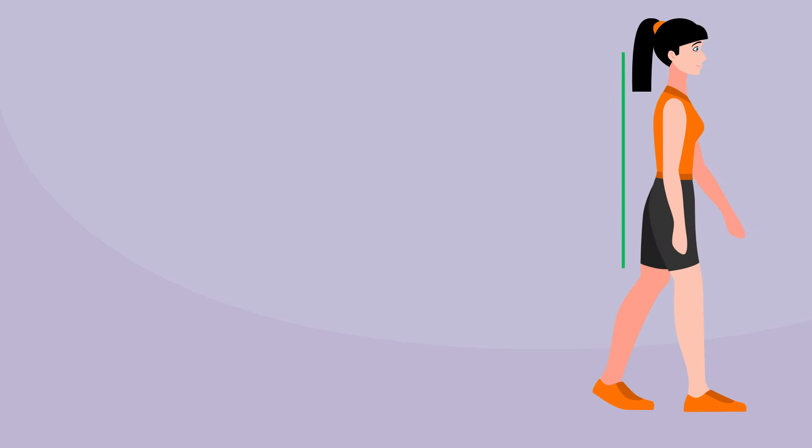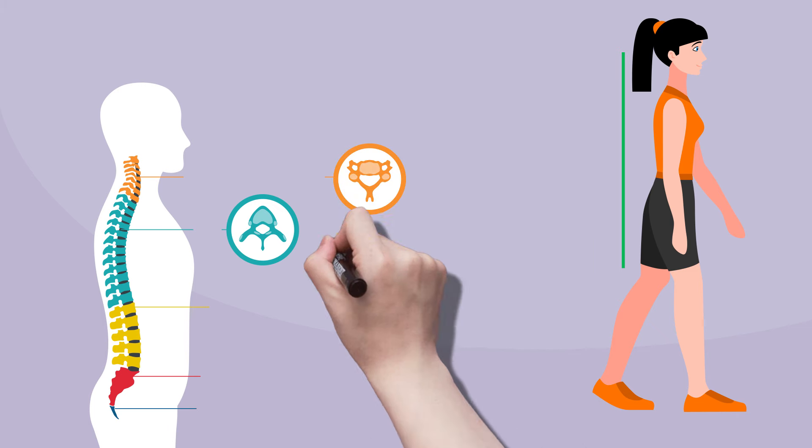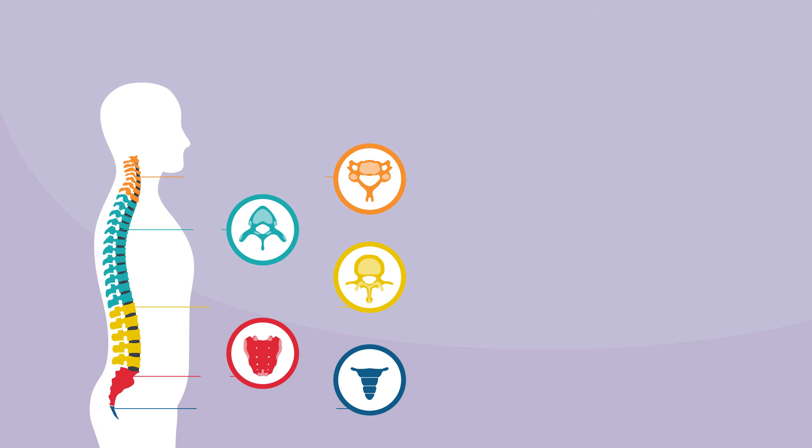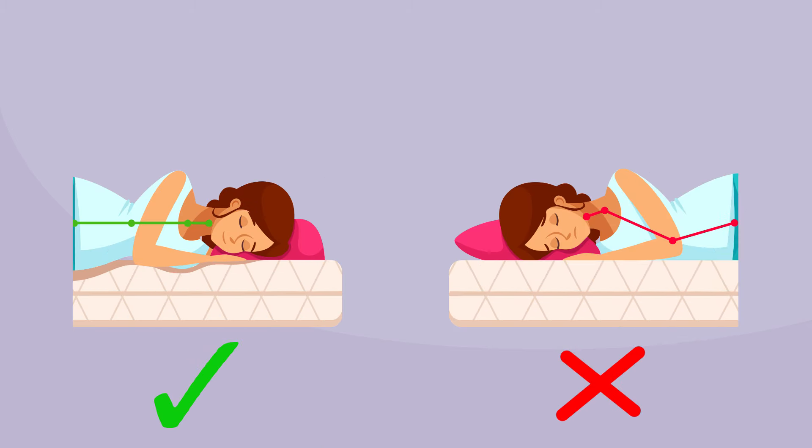But standing up straight isn't really an accurate term. Every spine has an individual curve to it. What's proper posture to one spine can be uncomfortable to another. And that's also why one mattress can be great for someone and awful for the next person.